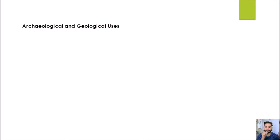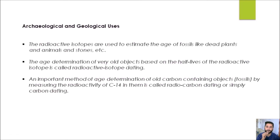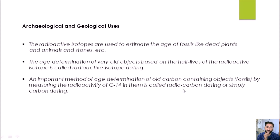The third use is archaeological and geological. Isotopes are used to estimate the age of fossil fuels. Once fossil fuels are discovered, their carbon isotope percentages are calculated, and with that we can find out the age of the fossil fuel. The isotope used for determining the age of fossil fuels and dead organisms like plants and animals is carbon-14, also called radiocarbon, and the process is called carbon dating.